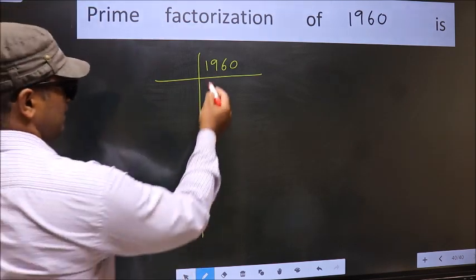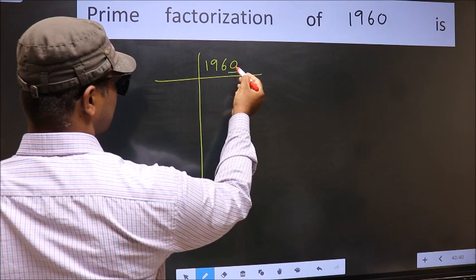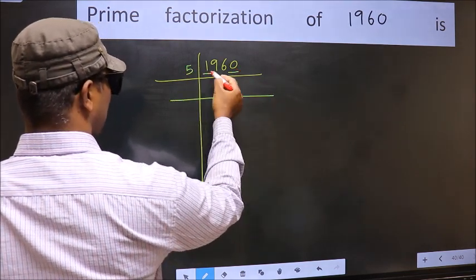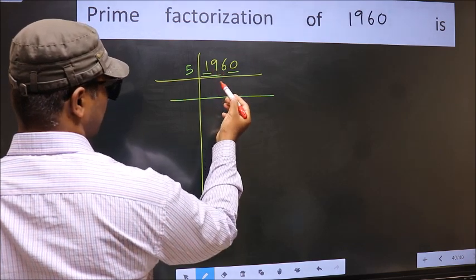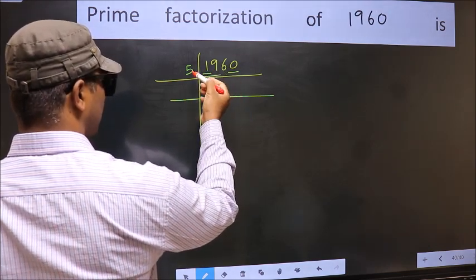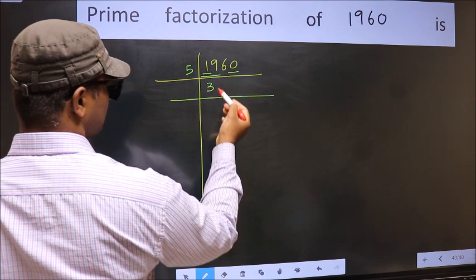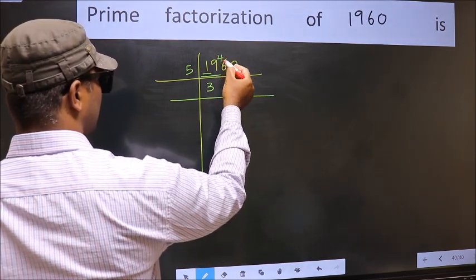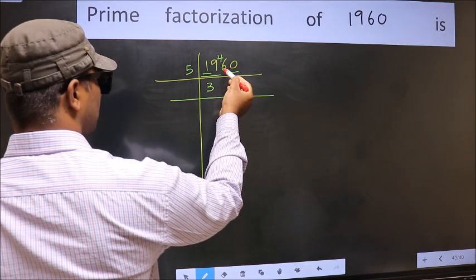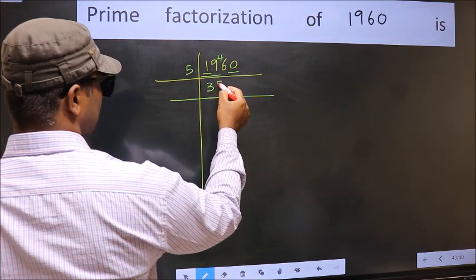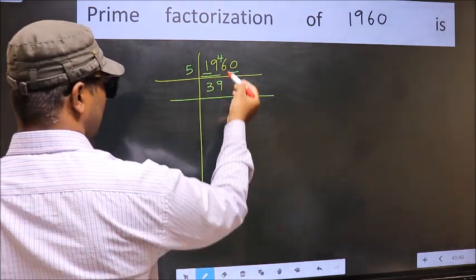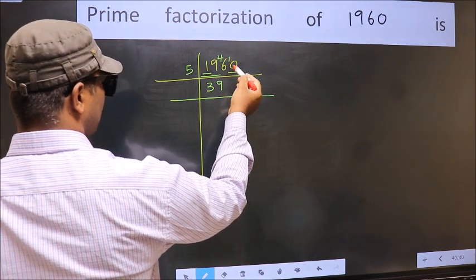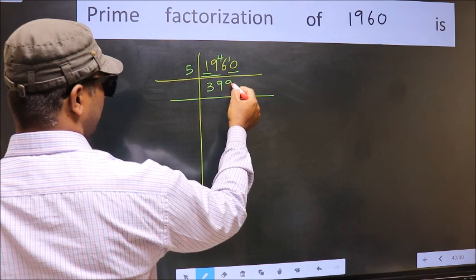In this number, last digit is 0, so take 5. First number 1 is smaller than 5, so take 2 numbers: 19. A number close to 19 in the 5 table is 5 times 3 is 15. 19 minus 15 is 4; 4 carried forward gives 46. A number close to 46 in the 5 table is 5 times 9 is 45. 46 minus 45 is 1; 1 carried forward gives 10. We get 10 in the 5 table at 5 times 2 is 10.